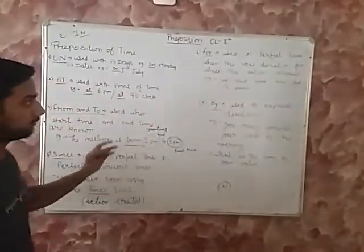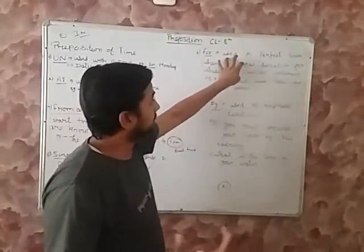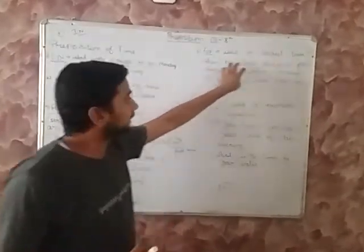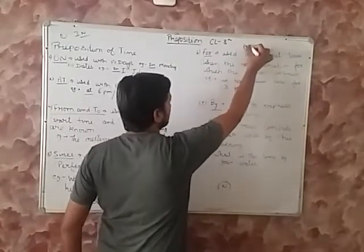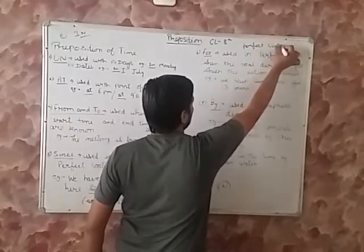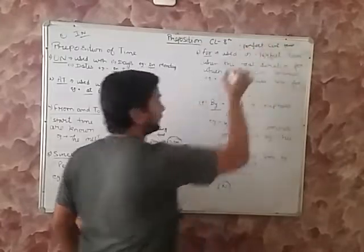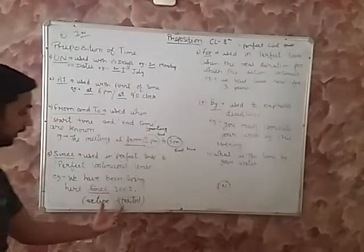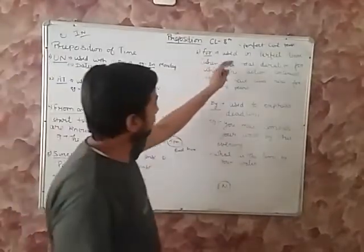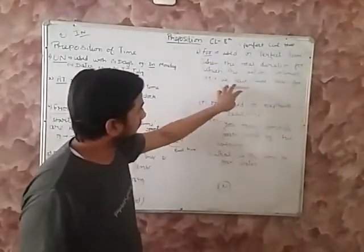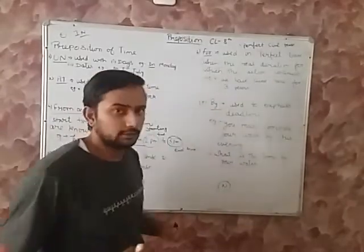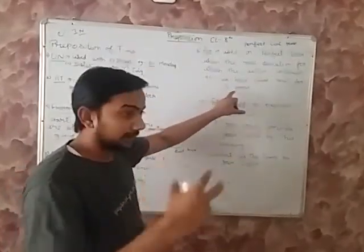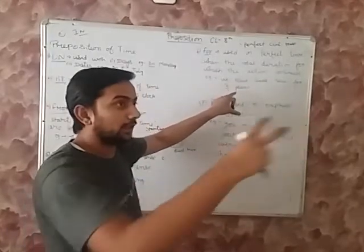Then for. Since and for. Both can be used. Both are using. We are using both preposition in perfect tense and perfect continuous tense. Perfect tense and perfect continuous tense. Here also. Perfect continuous tense.